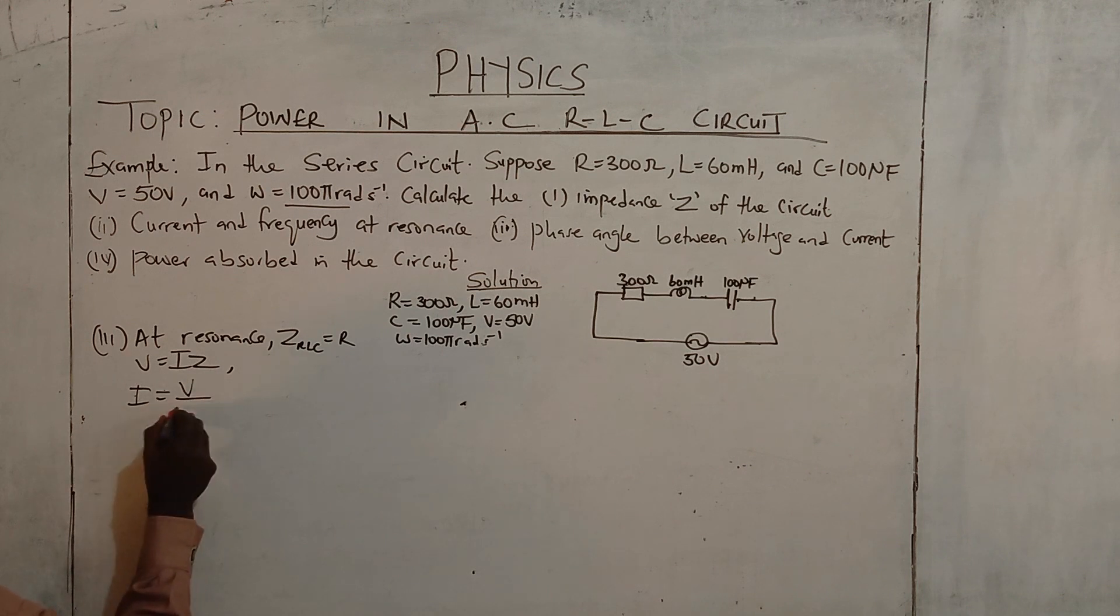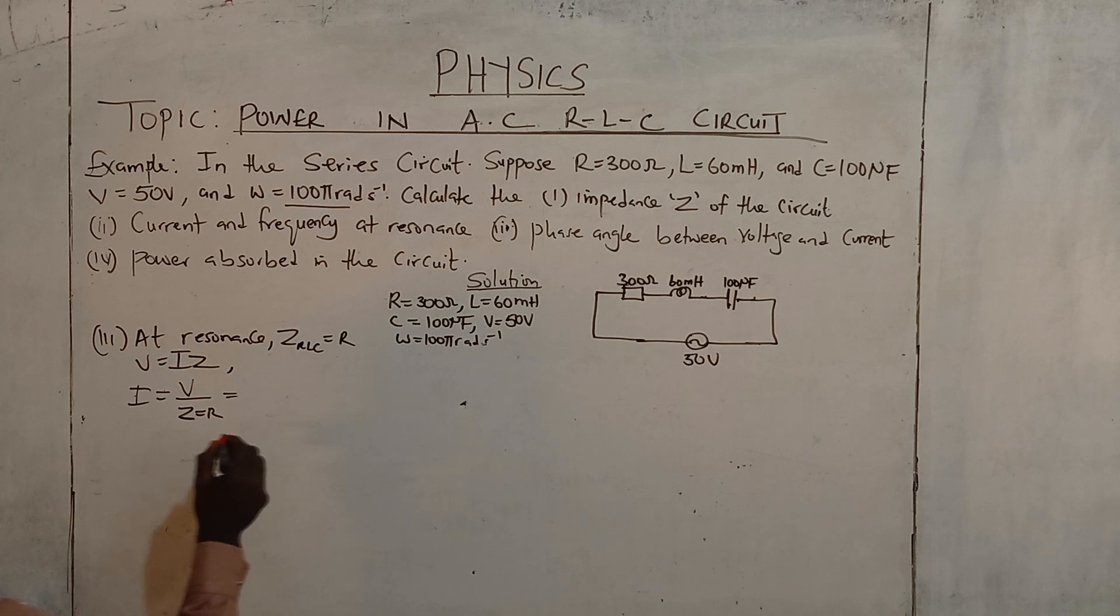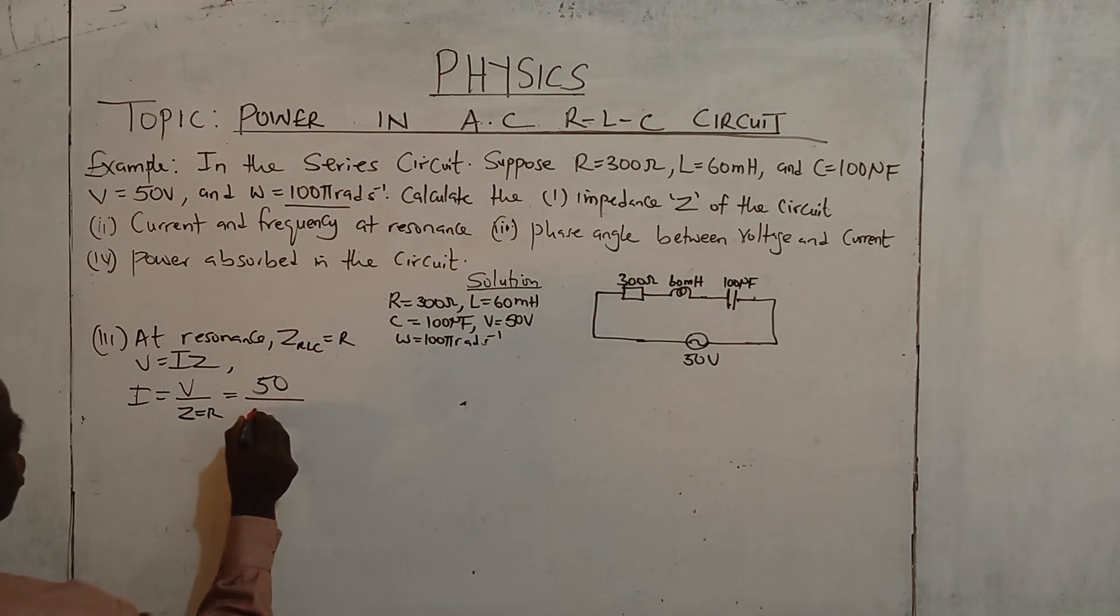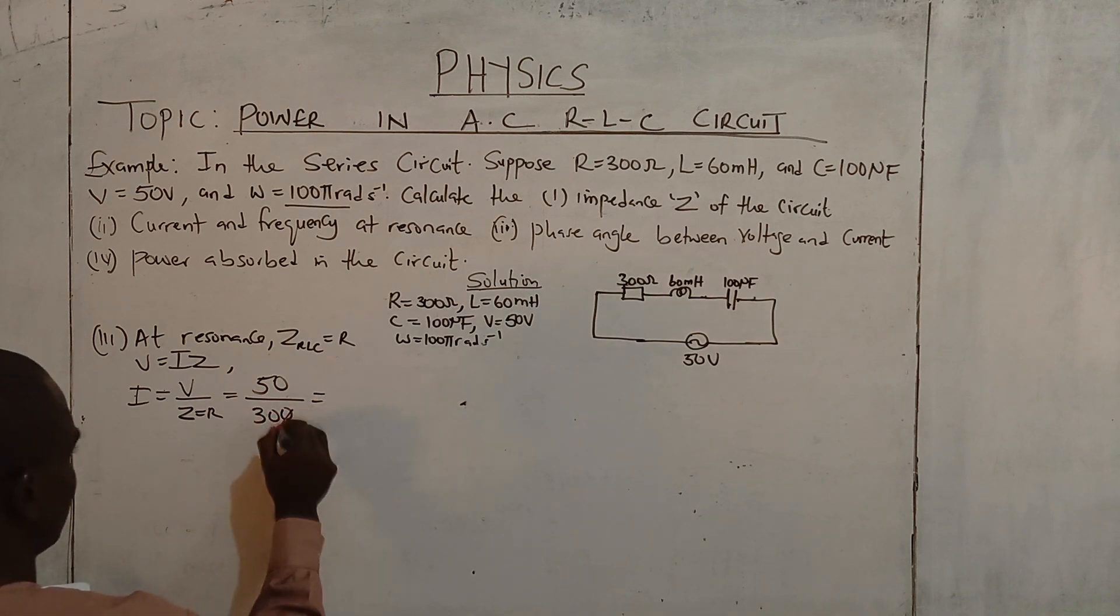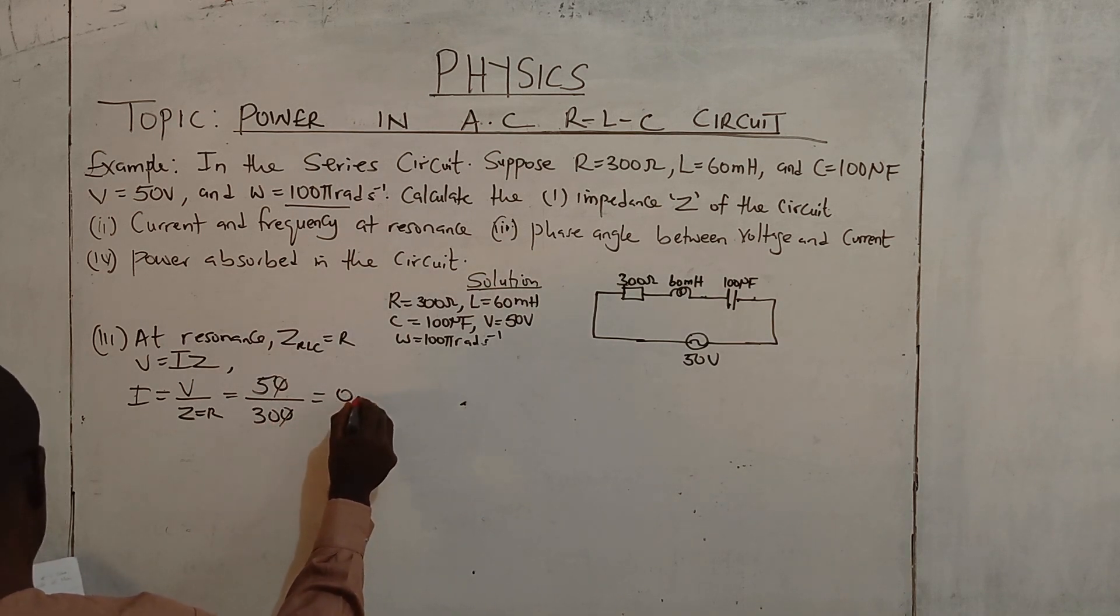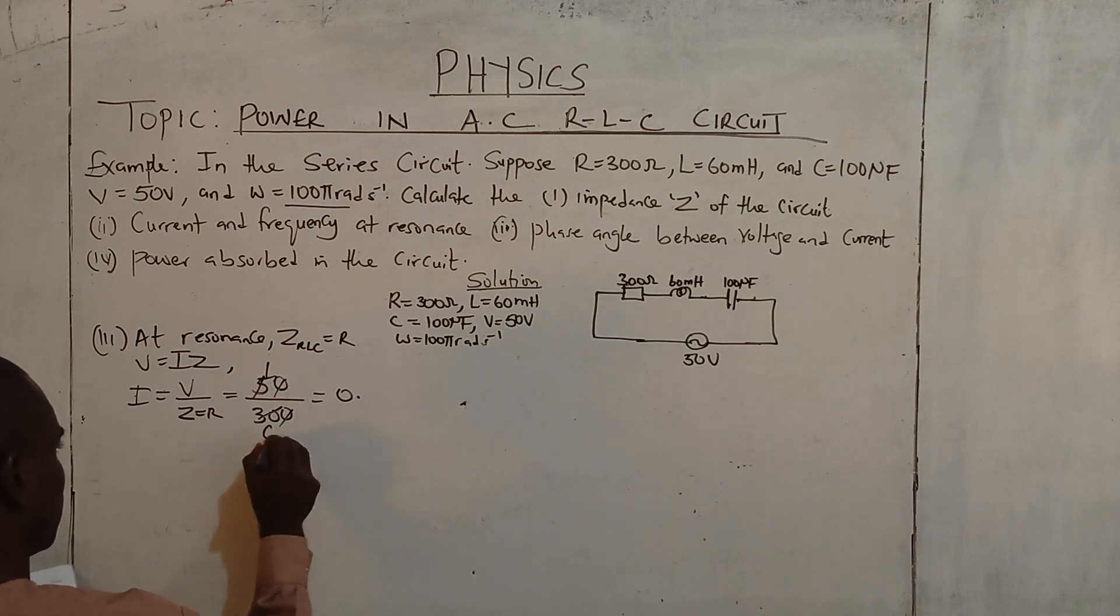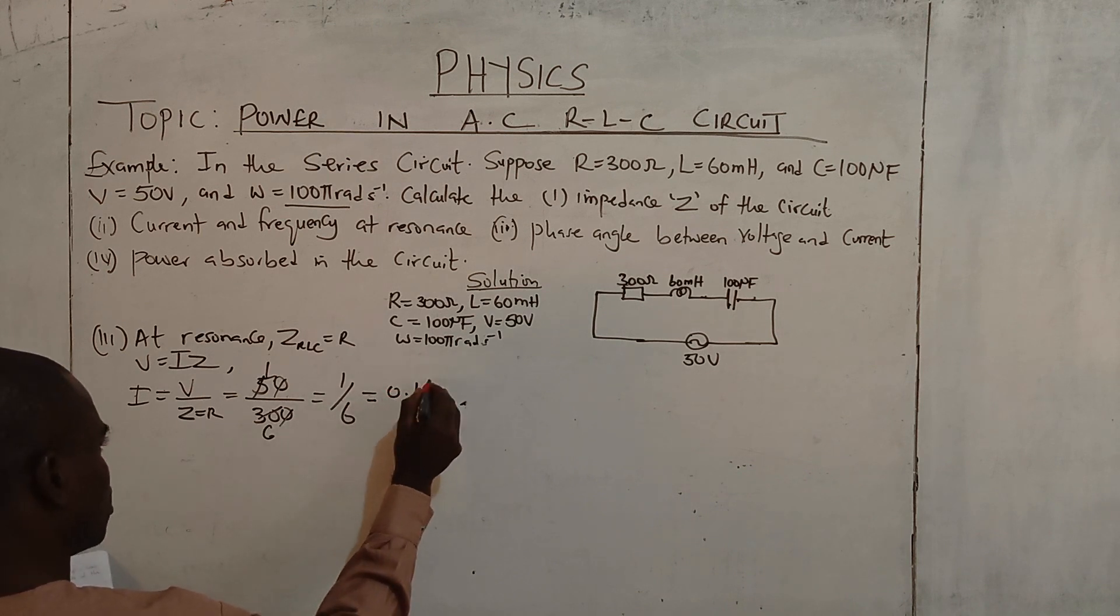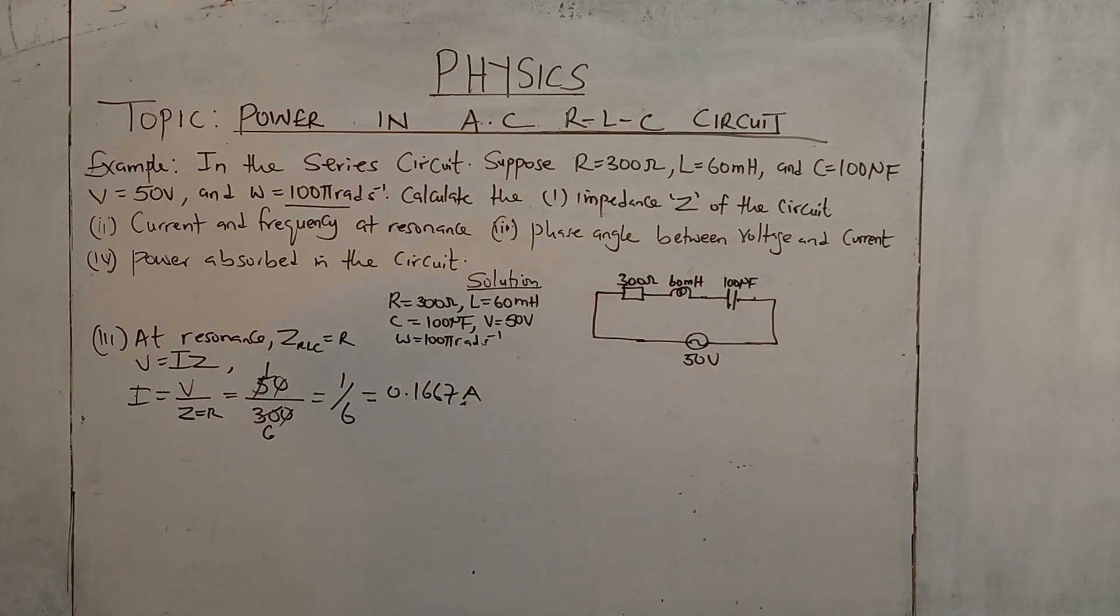Now I equals V over Z. So the currents are at resonance. Z RLC equals to R. Don't forget Z equal to R. I will be 50 over R, which is 300. We divide that one, which we get 0.1667 Ampere as the current at resonance.